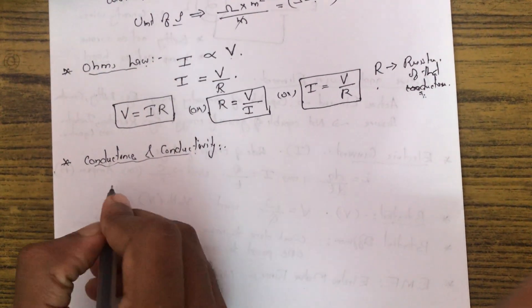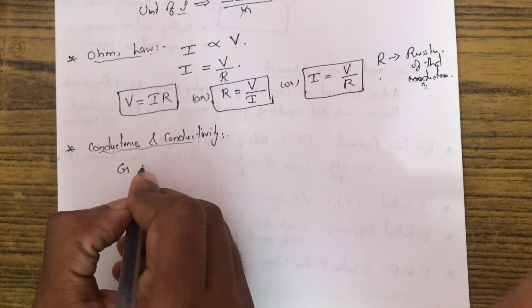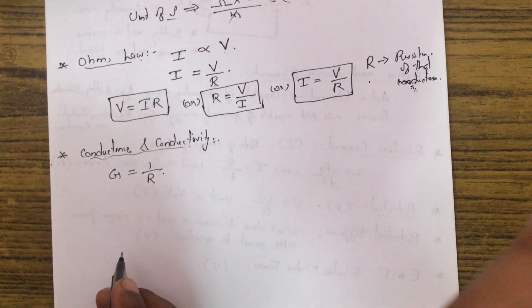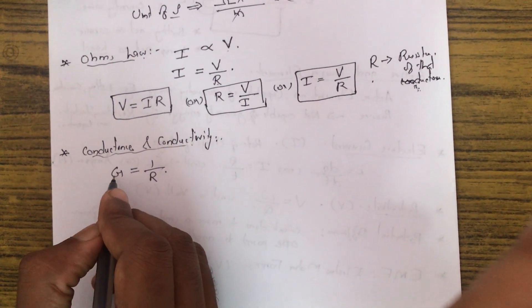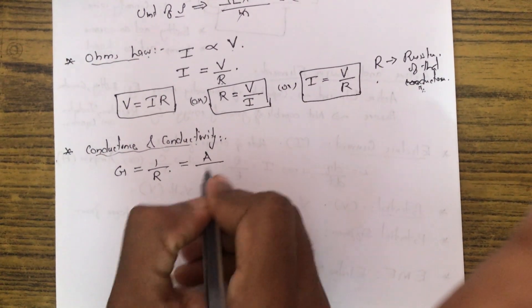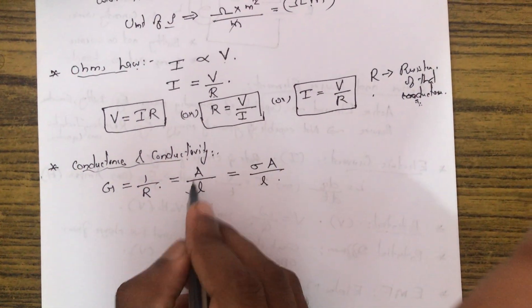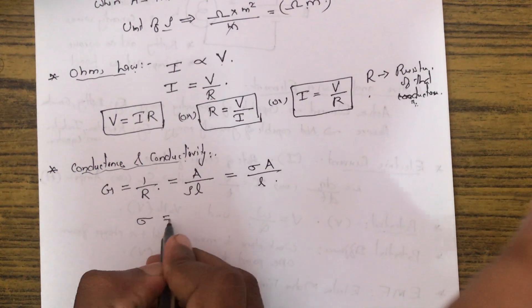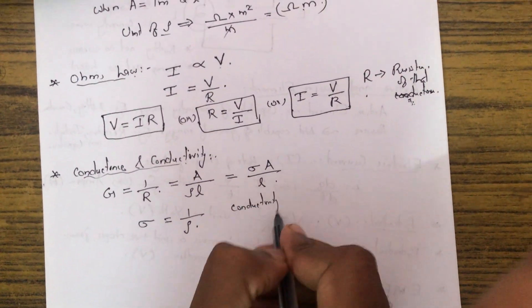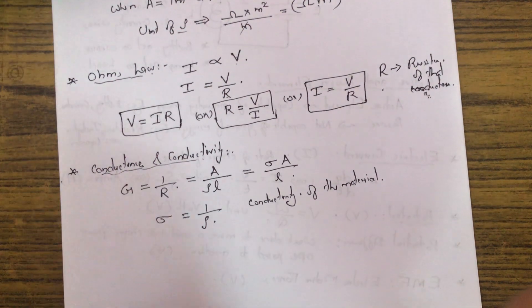Conductance is the reciprocal of resistance: G = 1/R. Since R = ρl/A, we get G = A/(ρl) = σA/l, where σ (sigma) = 1/ρ is called the conductivity of the material.